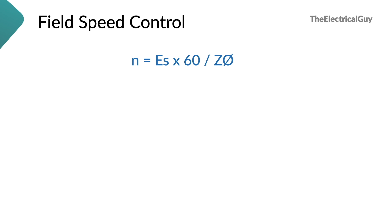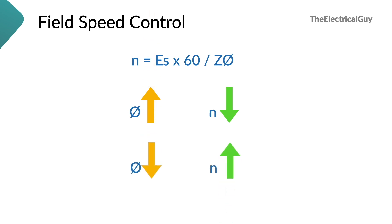If ES, the supply voltage, is constant, then the only remaining variable is flux — so you must control the flux to control the speed of the DC motor. As you can see, flux phi is inversely proportional to speed. That means if you increase phi, the speed decreases, and if you decrease phi, the speed increases. If you increase one, the other decreases — that is inversely proportional.